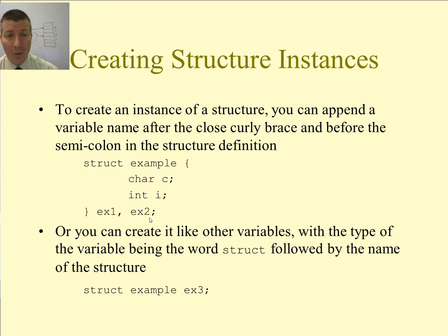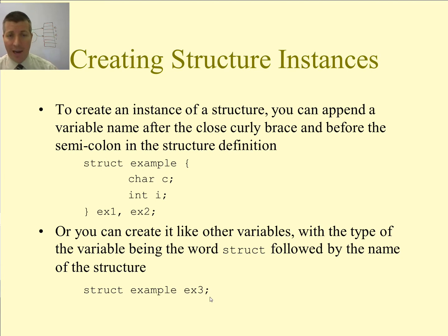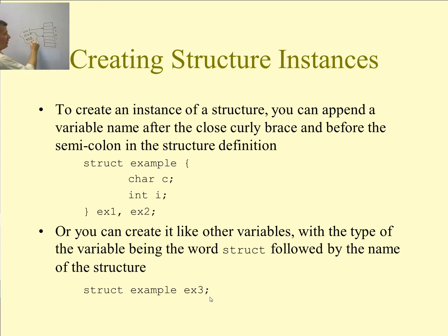Another way that I can create an instance — if I don't want to create the static instances up when I define the structure — is I can say anywhere in my code where I create variables: struct example, that's the name of my structure, followed by the name of a variable and a semicolon. I do this just like I would create a variable somewhere else in my code.